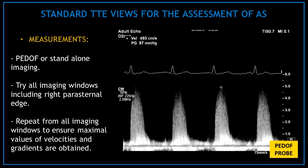As part of the assessment of aortic stenosis, use the Pedof probe or blind probe. Use the stand-alone imaging and try all imaging windows, including the right parasternal edge. Repeat from all imaging windows to ensure maximal values of velocities and gradients are obtained.